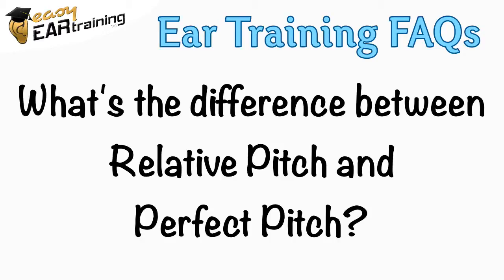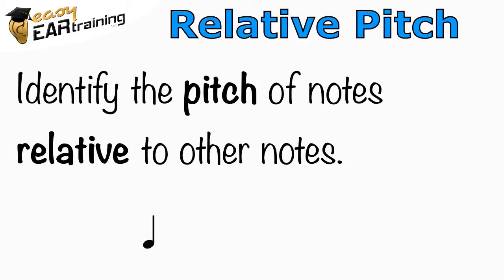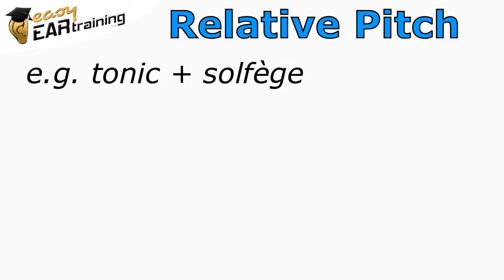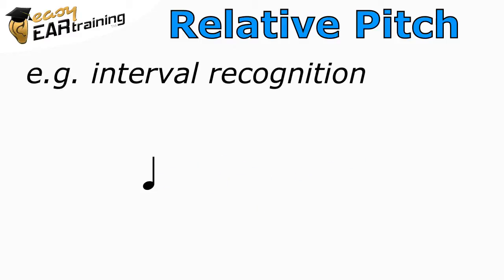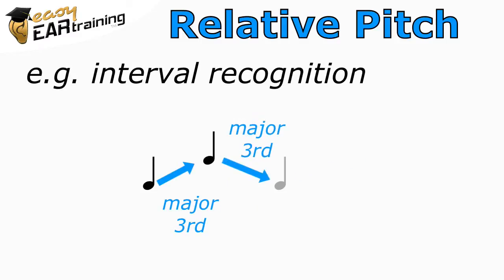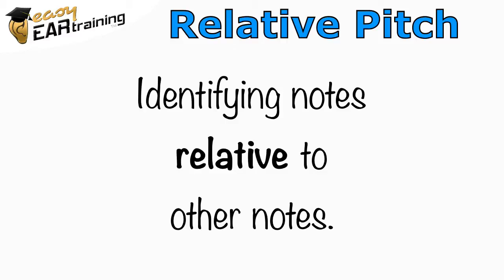What's the difference between relative pitch and perfect pitch? Relative pitch is the ability to identify the pitch of notes relative to other notes you've heard. For example, you might have a sense of the song's key, the tonic, resting note, and then be able to recognize the other pitches in the melody using solfege. Or, you might use your interval recognition skills to judge the distances between notes and work out a tune that way. The essential point is, you are identifying notes relative to other notes.